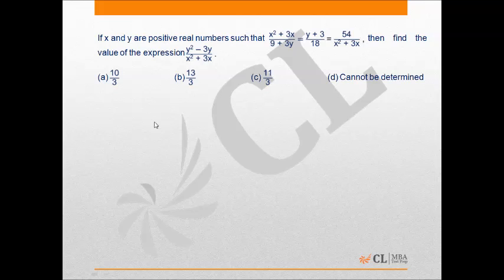Now from here we can see that this entire expression can be expressed as x square plus 3x upon 9 plus 3y equals y plus 3 upon 18. If I multiply both the numerator and denominator by 3, I will get 9 plus 3y upon 54.